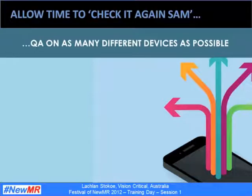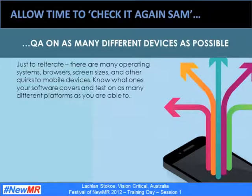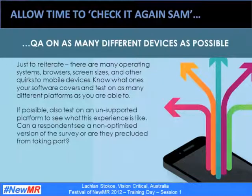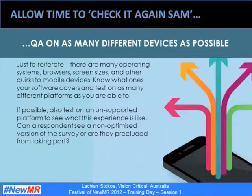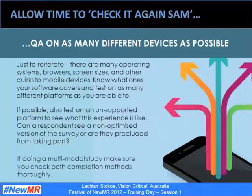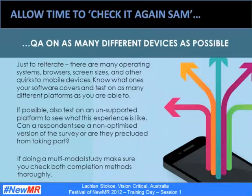In terms of QA, using mobile can add time and potential for error, so make sure you allow enough time to check it thoroughly. There are many operating systems, browsers, screen sizes and other quirks to mobile devices — know what ones your software covers and test on as many different platforms as you are able to. If possible and you're doing a mobile web survey, also test on an unsupported device to see what that experience is like. And if you're doing a multimodal study, make sure you check both completion methods thoroughly.